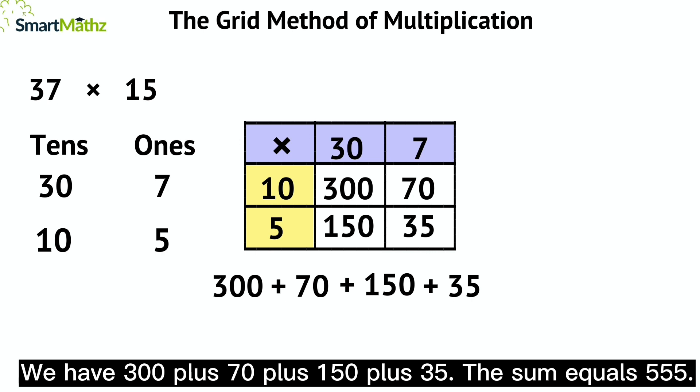We have 300 plus 70 plus 150 plus 35. The sum equals 555.